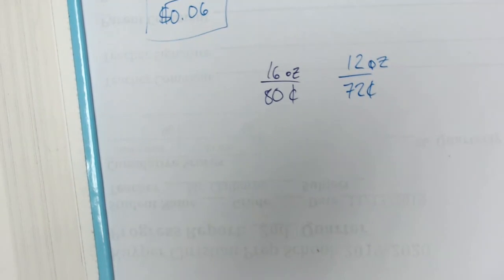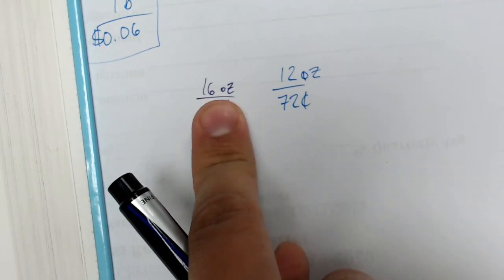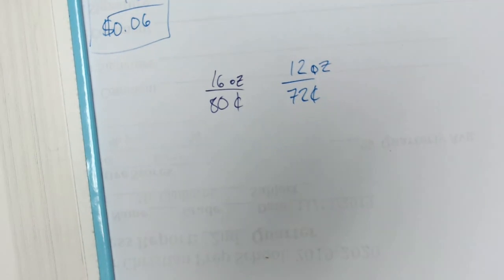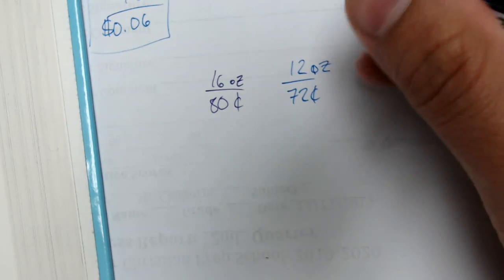So on these ones I'm going to reduce 16 and 80 by 16, and then 12 and 72 by 12. Cool thing is I know exactly how many times 12 goes into 72, that is going to be six times. So I know over here one ounce is gonna be six cents.